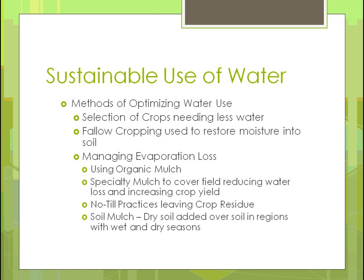Other methods of optimizing water use include selecting crops that need less water if you're in an area without much available water. Fallow cropping — meaning you don't grow a crop — means there are no roots taking moisture out of the soil, so whatever moisture gets into the soil stays there. You can also manage evaporation loss by using organic mulch around the base of plants, which covers the field, reduces water loss, and can potentially increase crop yield.